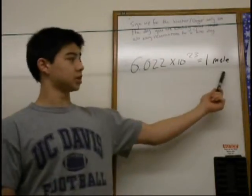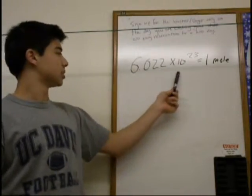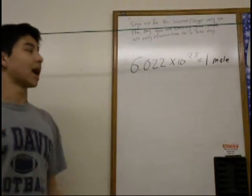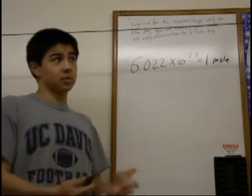So the mole is actually just a number. It's 6.022 times 10 to the 23. That could be moles of atoms, moles of molecules, and it can be like, for example, moles of grapefruits.